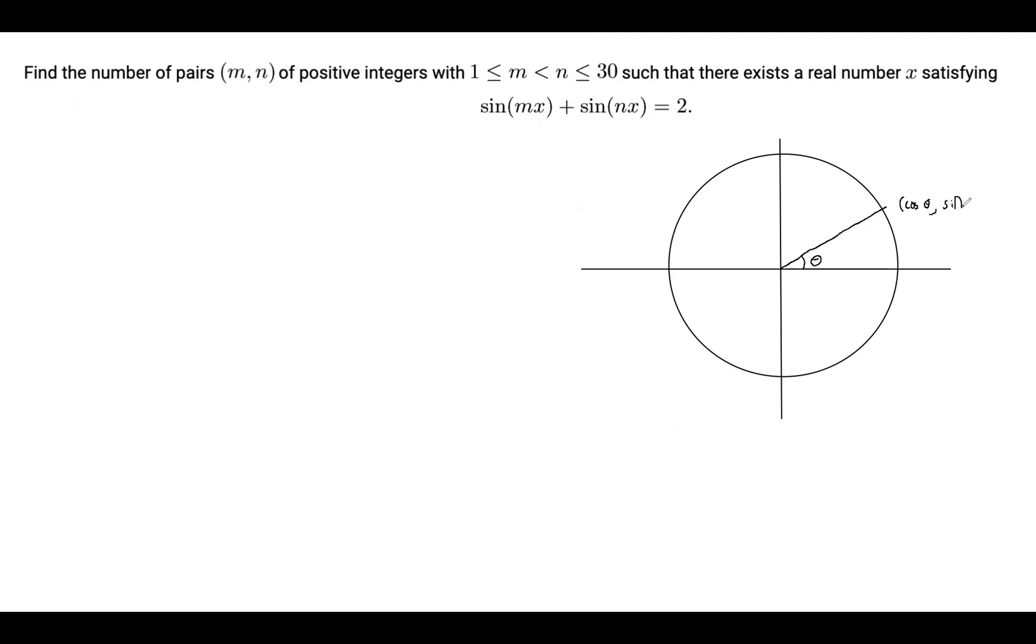So sine of theta is the y coordinate, and what it means for sin(mx) + sin(nx) to equal 2 is that since the maximum value of sine is 1, which occurs right up here at the highest point of the unit circle (0,1), it means that both sin(mx) and sin(nx) are equal to 1.